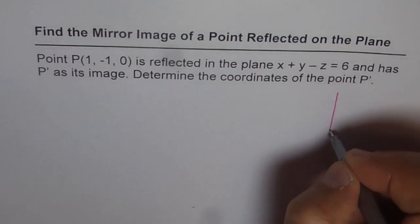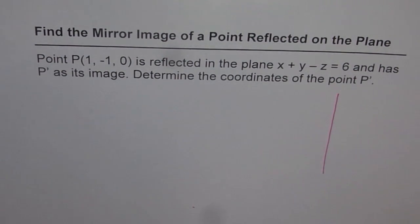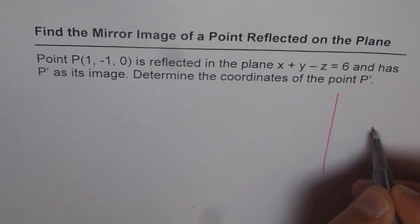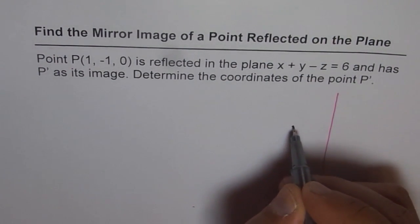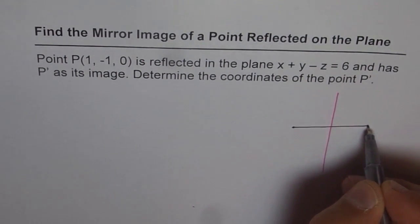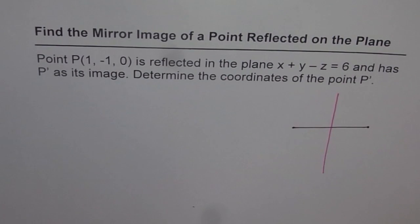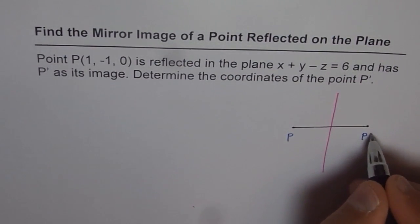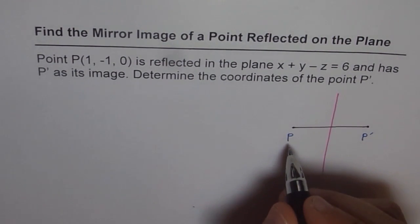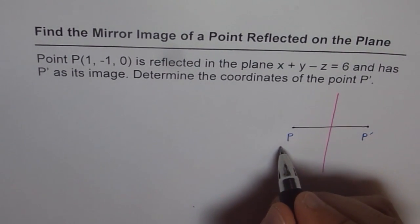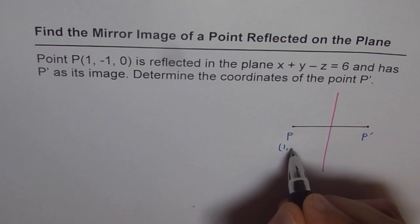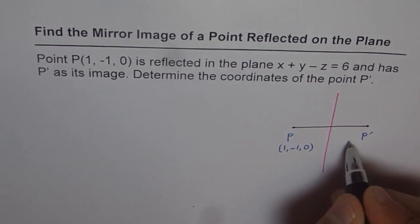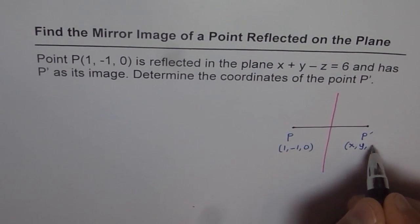Think of it like this: we have a plane, and there is a point on the left side of the plane. It gets reflected equally distant away — that is the point which gets reflected. So we are talking about a point P and that is its reflection P dash. Point P is given to us as (1, -1, 0) and its reflection is something we have to find. Let it be (x, y, z).